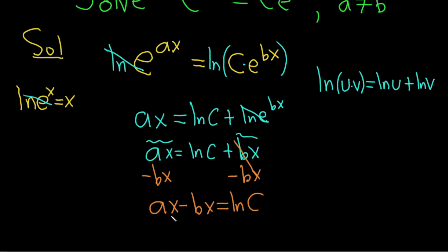Because we have an x on each term here, we can factor out an x. So this is x(a - b) = ln(c).